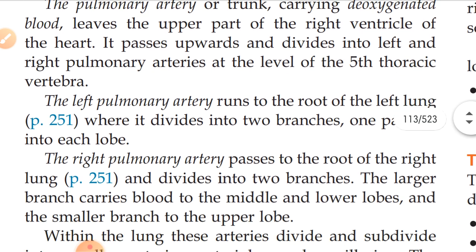The right pulmonary artery passes to the root of the right lung and divides into two branches. The larger branch carries blood to the middle and lower lobes, and the smaller branch supplies the upper lobe. The right side of the lung is divided into three lobes.